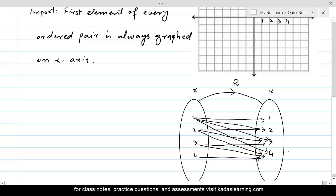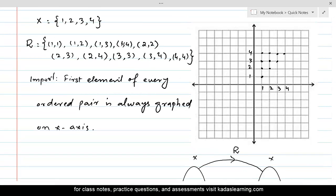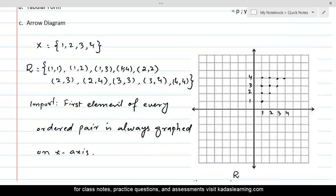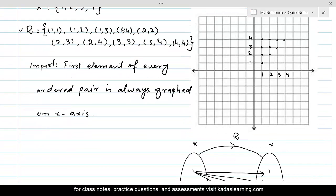This is representation of the same relation using arrow diagram. And here you can see that we have represented the same relation using a graphical representation. And this on the left hand side is the tabular form. And that's it. In this lesson, we'll see you in the next.